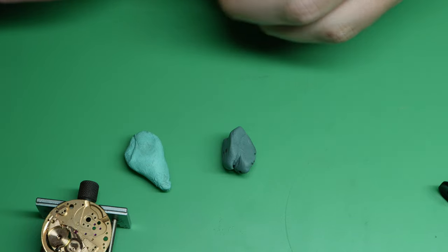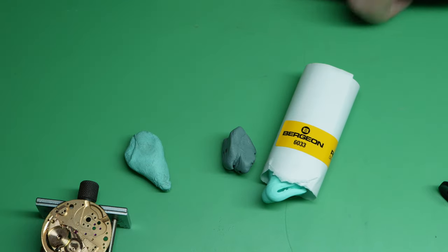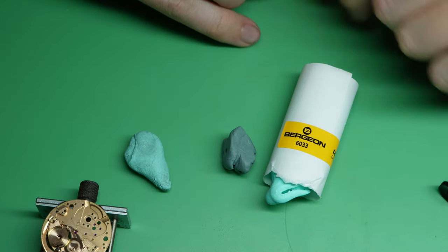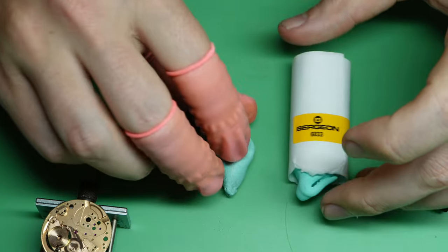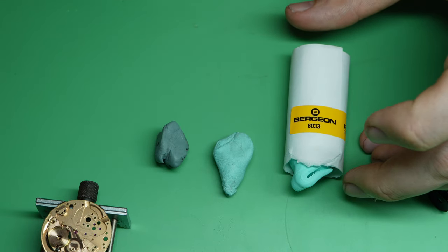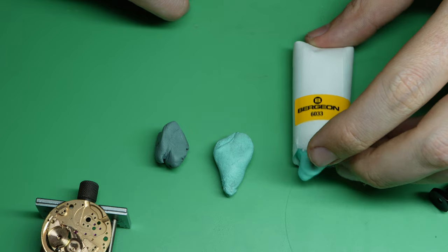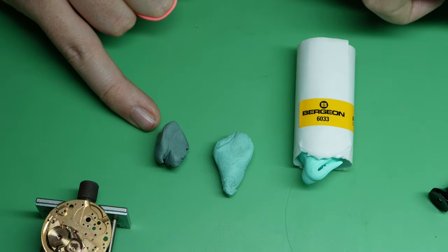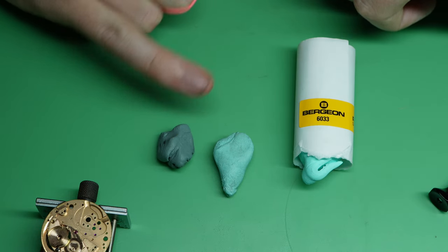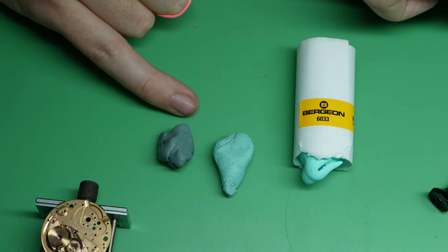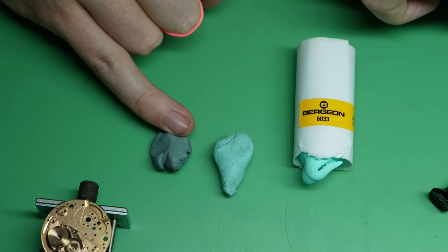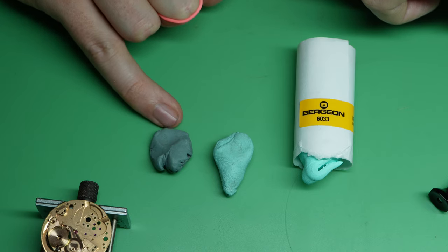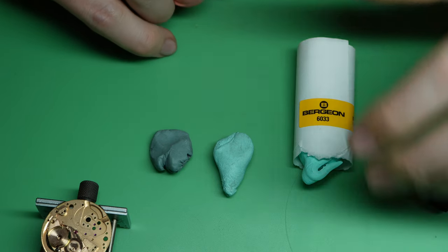Rodico comes in these nice little slips. That's the reference number if anyone wants to get any, it's Bergeon 6033. Now you can see it's a very light color when it's clean, and then it progressively gets darker. When it gets to this point, it's no good for cleaning purposes. I literally just use it to quickly wipe down my desk, and then I'll use a cleaning solution after that to wipe the desk down.